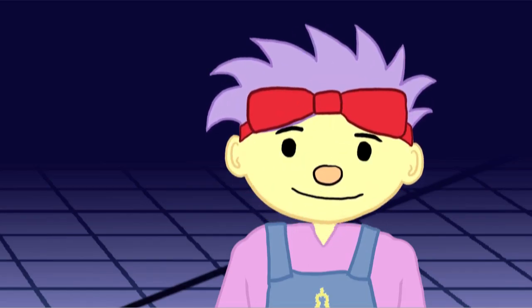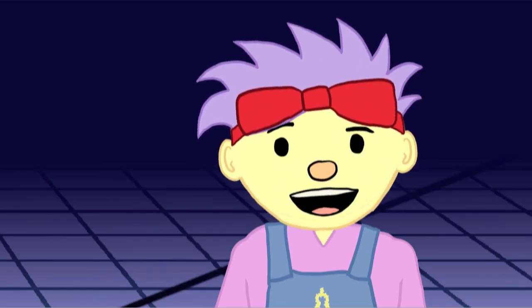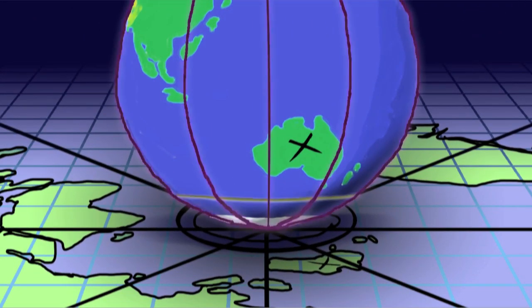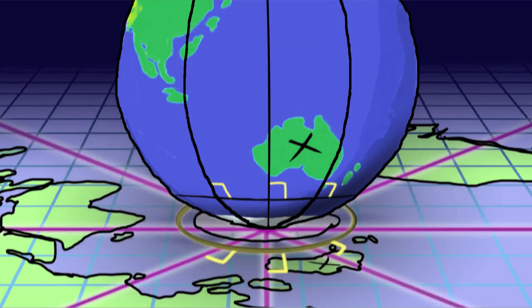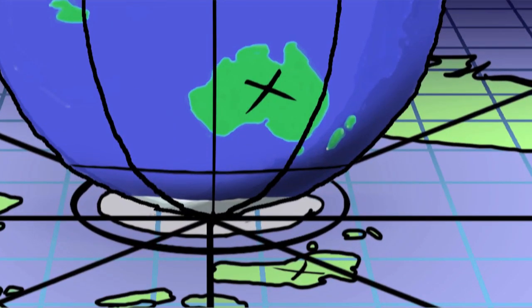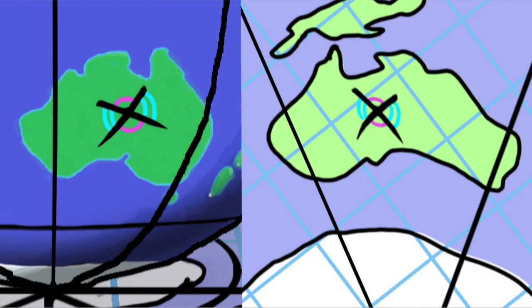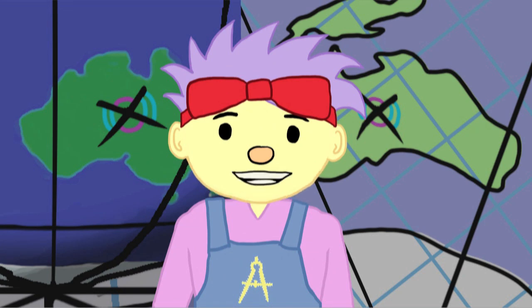But wait a minute! One feature hasn't changed! Look at the angles! These longitude lines intersect at 90 degrees on the globe and the map. Even the X I drew has the same angle measurements! Our stereographic projection preserves angles!